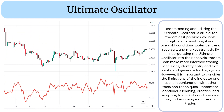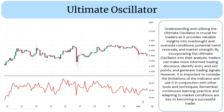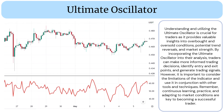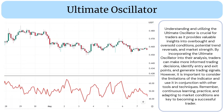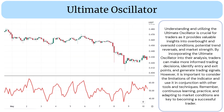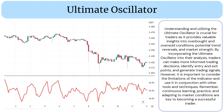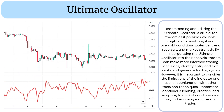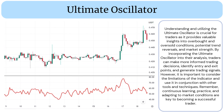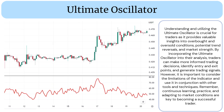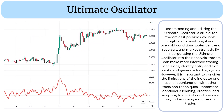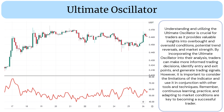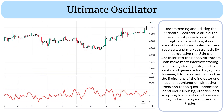Understanding and utilizing the ultimate oscillator is crucial for traders, as it provides valuable insights into overbought and oversold conditions, potential trend reversals, and market strength. By incorporating the ultimate oscillator into their analysis, traders can make more informed trading decisions, identify entry and exit points, and generate trading signals. However, it is important to consider the limitations of the indicator and use it in conjunction with other tools and techniques. Continuous learning, practice, and adapting to market conditions are key to becoming a successful trader.